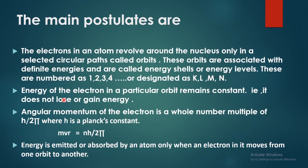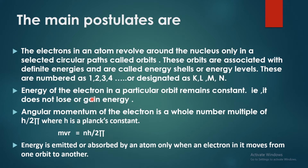The second point is: the energy of the electron in a particular orbit remains constant. It is constant — there is no loss or gain of energy. Energy does not lose or gain.